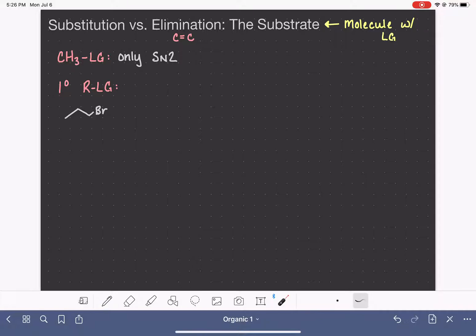they are capable of doing both substitution as well as elimination. However, they are not good at forming carbocations. The primary carbocation is very unstable. And for that reason, these molecules can only do the two mechanisms, SN2 and E2.